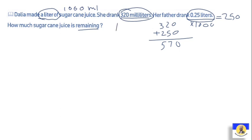Now we'll find what's remaining. We'll do 1000 minus 570. 0 minus 0 is 0. Here we borrow: 10 minus 7 equals 3. 9 minus 5 equals 4. So the remaining is 430 milliliters.